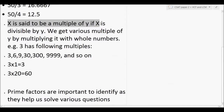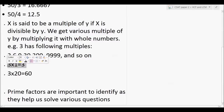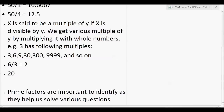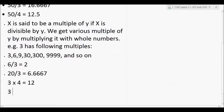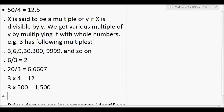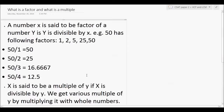Now coming to multiples: X is said to be a multiple of Y if X is divisible by Y. Is 6 a multiple of 3? Yes, because when 6 is divided by 3 we get 2. Is 20 a multiple of 3? No, because 20 divided by 3 gives 6.667. Multiples are generated by multiplying a particular number with any whole number — for example, 3 × 4 = 12, or 3 × 500 = 1500.